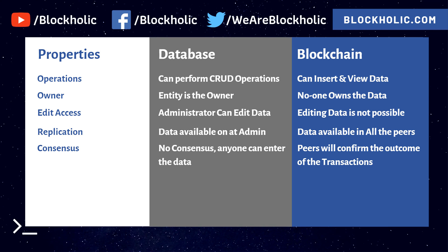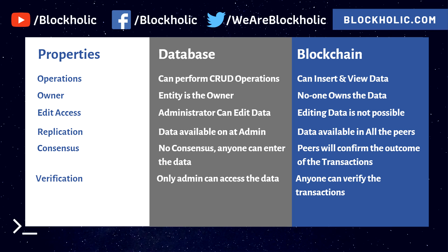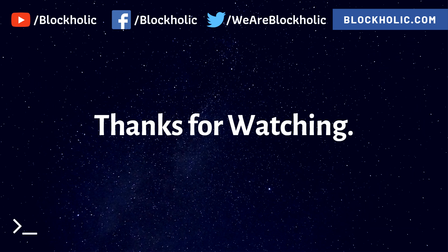The last point is verification. In an enterprise traditional database, if I want to verify someone's attendance, I cannot do it because only an administrator has access. In blockchain, anybody can view the data. That is the main reason organizations create their own private networks — so it won't be accessible by the public. And that's all for this video.